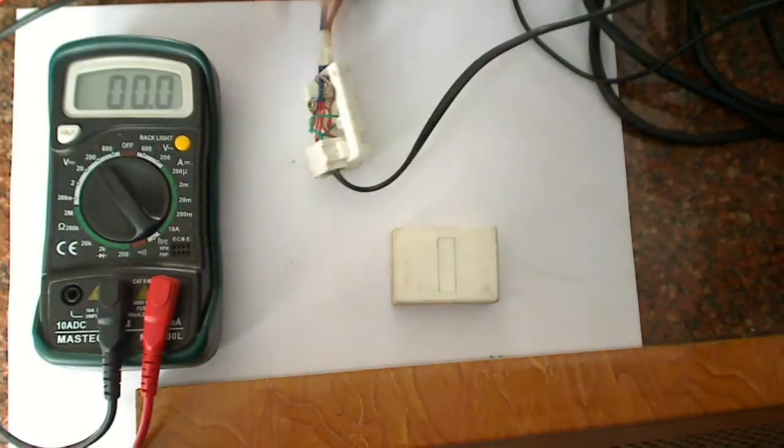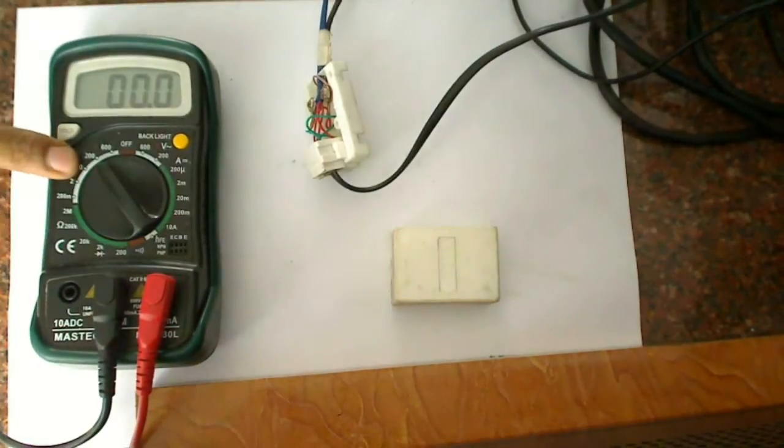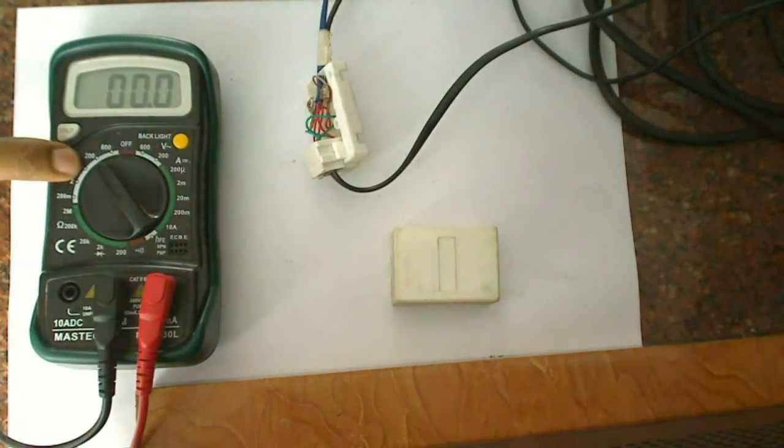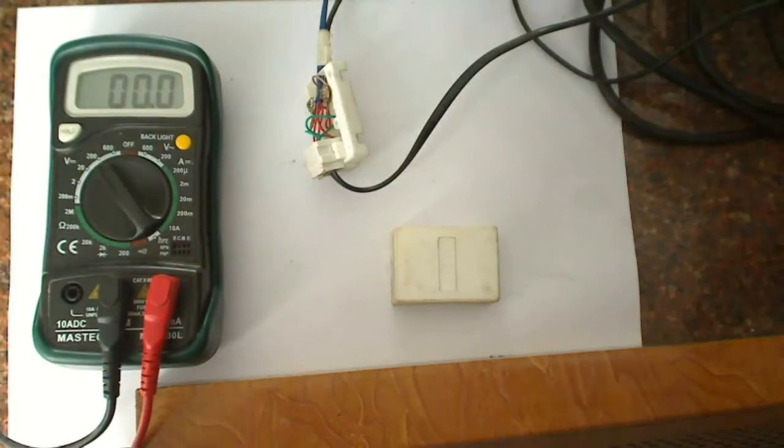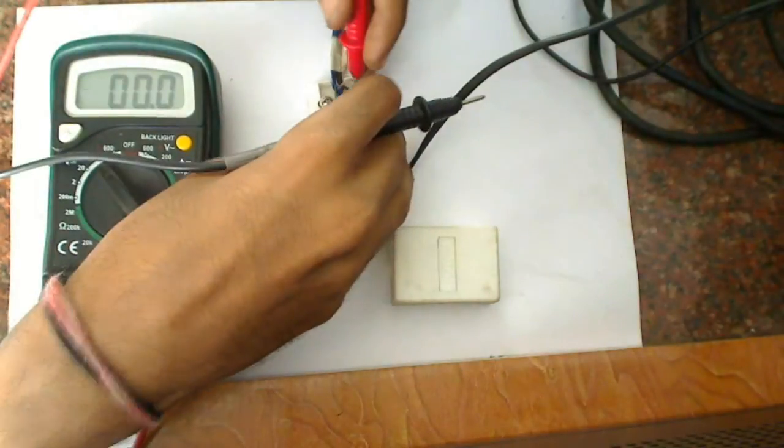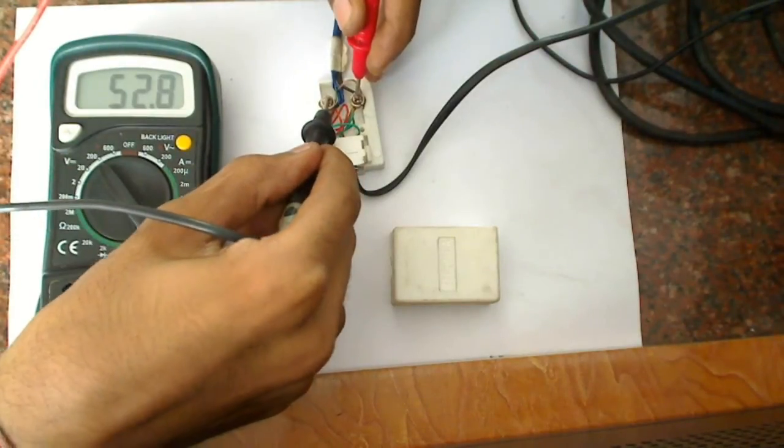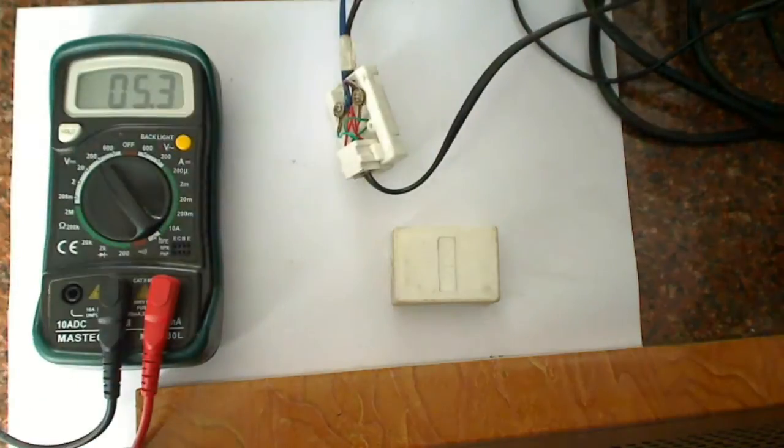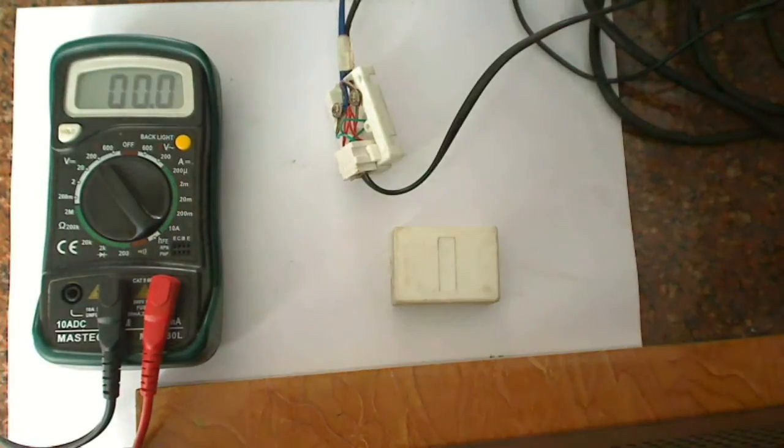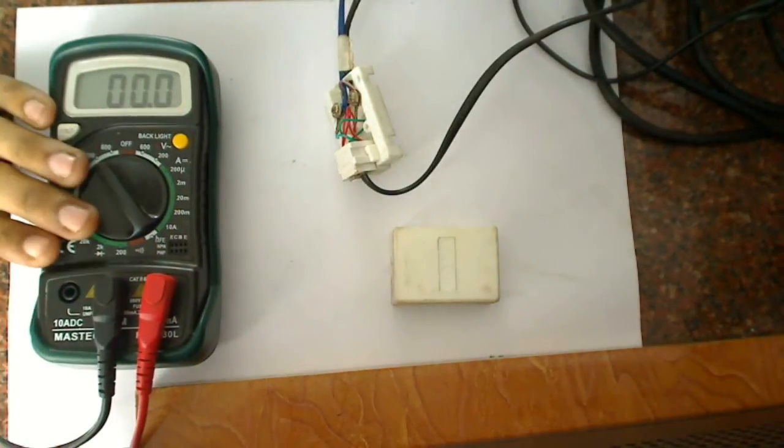So we'll check the voltage here which we will get. I've kept the DC voltage in the 200 volts range. Now I'll check the voltage. If you see, you're getting around 52 volts. Actually these are serial pulses of 52 volts which you're getting in the landline wire.